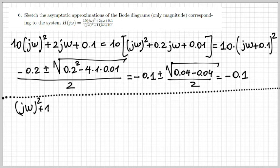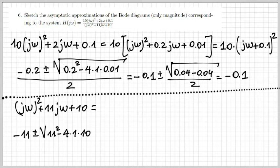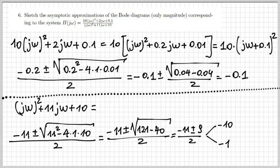Let's move on to the denominator. We look for the roots of the polynomial in jω, and this time there are two different roots. One root is minus 10, the other is minus 1. So the denominator can be expressed as a product of two first order terms: (jω + 10) times (jω + 1).